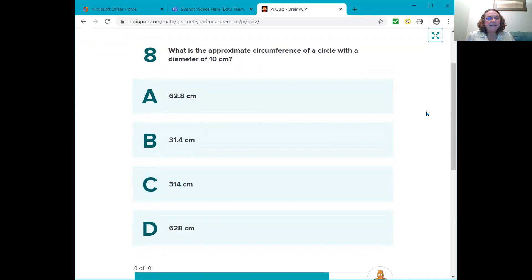What is the approximate circumference of a circle with a diameter of 10 centimeters? Is it A, 62.8 centimeters? B, 31.4 centimeters? C, 314 centimeters? Or D, 628 centimeters? Yep. The answer is 31.4 centimeters.